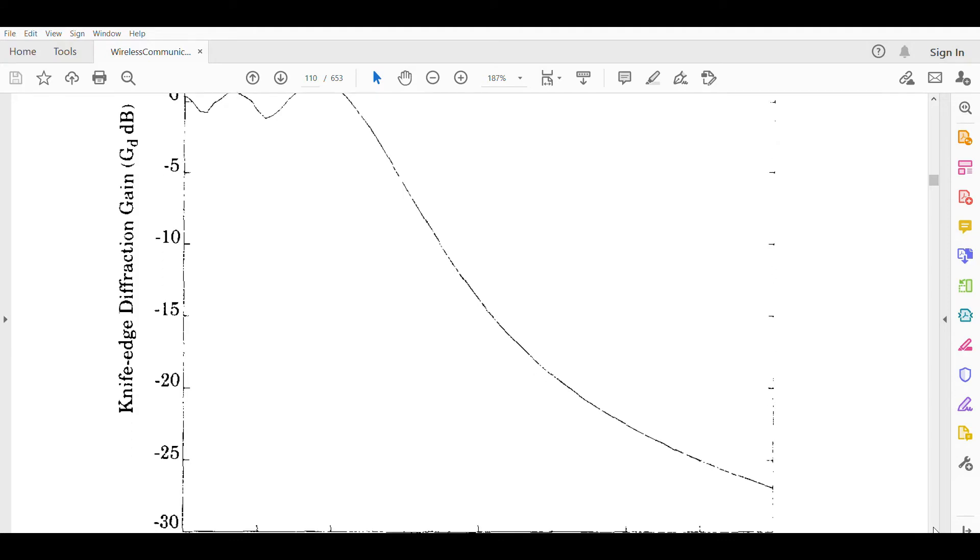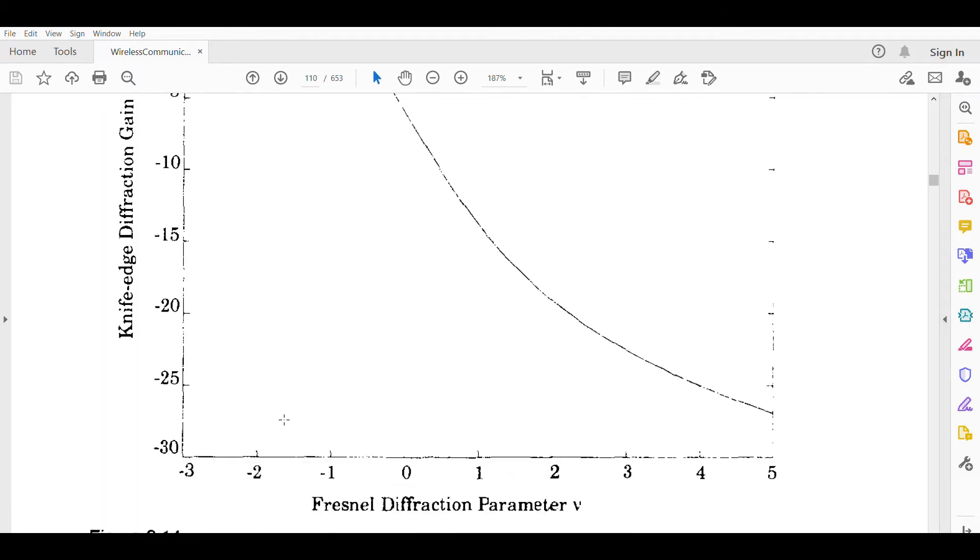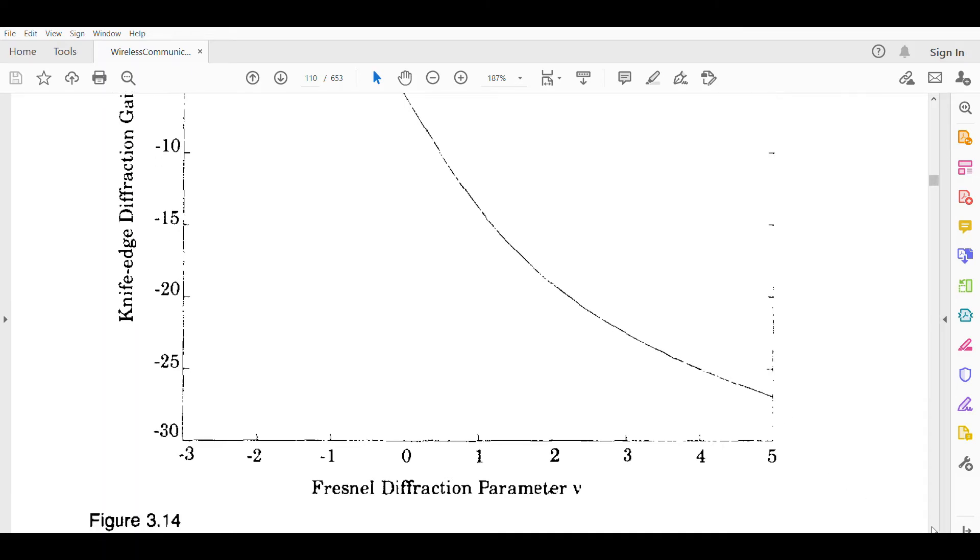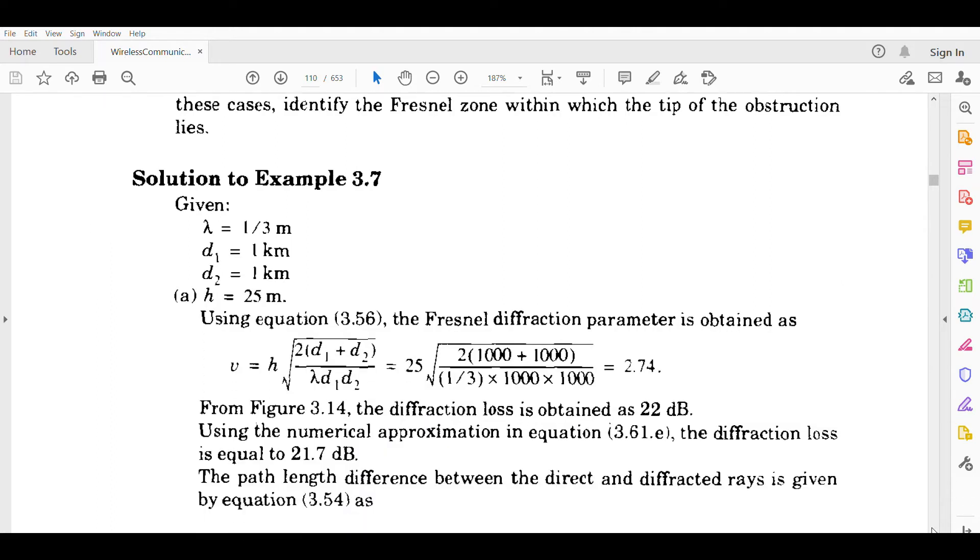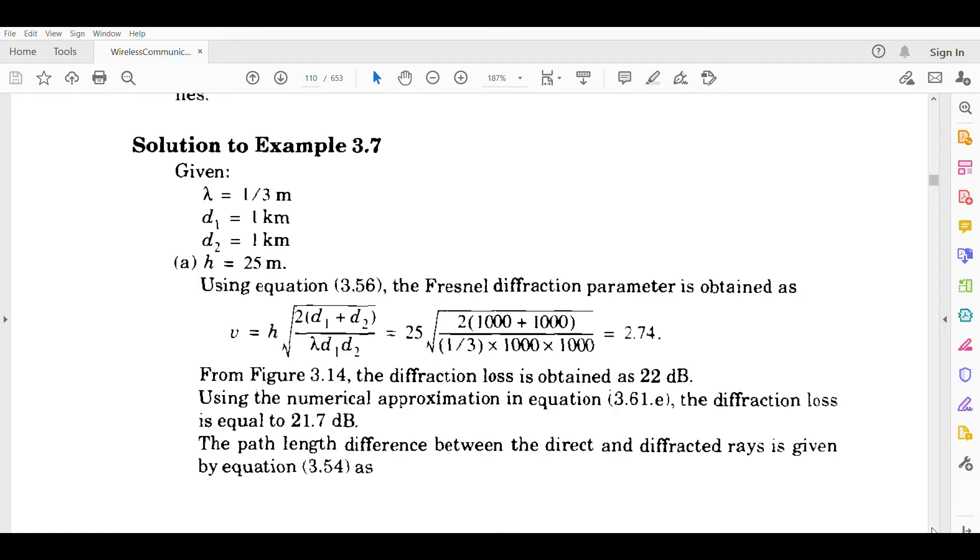Knife edge diffraction gain is reduced as we talk about these values. This is a parameter - when we talk about the v parameter, going from negative to positive, this is figure 3.14. The Fresnel zone is where the tip of the obstruction lies, and you can identify the Fresnel zone with the help of equation 3.60.